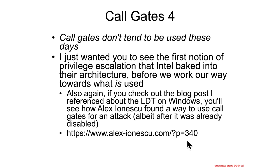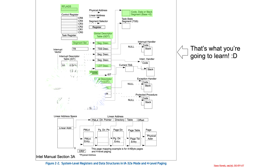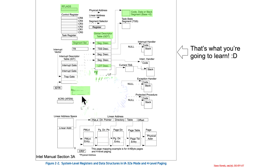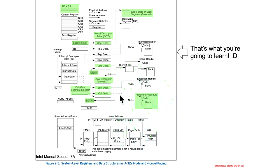Now that you understand call gates, segments, and things like that, you'll be extremely well prepared to go read and understand that post. The call gate segment selector can be used to point at some call gate in the LDT or GDT, and that call gate ultimately points at some sort of protected procedure — some code in the kernel intended to run and do some action after transitioning from user space to kernel space.